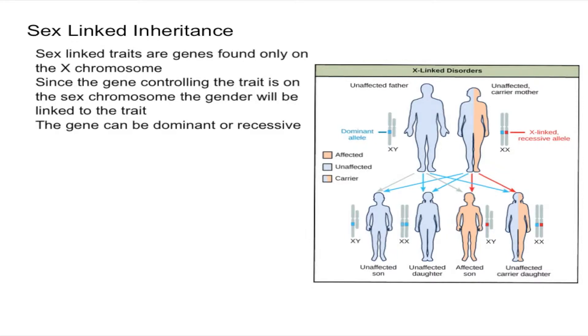So let's go over what sex-linked inheritance is. Sex-linked traits are genes that are found only on the X chromosome and not on the Y chromosome. Since the gene controlling the trait is on a sex chromosome, the gender of the individual will be linked to a trait. What do I mean by that?